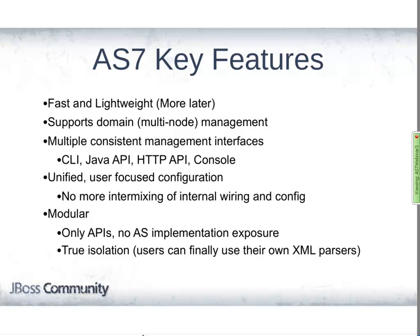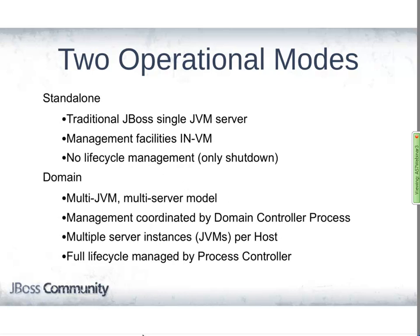Another exciting change is a pure modular class loading environment. Most application servers use a traditional Java EE class loading architecture based on an inheritance model — one big class loader at the top, another below it, and you automatically inherit all classes from above whether you want them or not. In AS7, everything is completely modular and isolation is taken to the highest possible level. A deployment can actually use its own XML parser, which has been an issue with application servers since they were first rolled out.